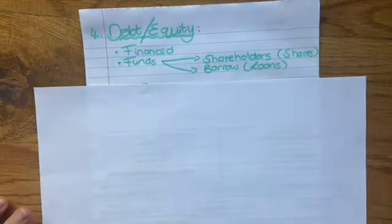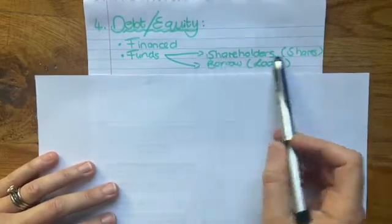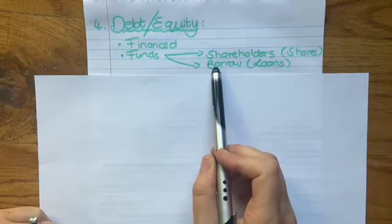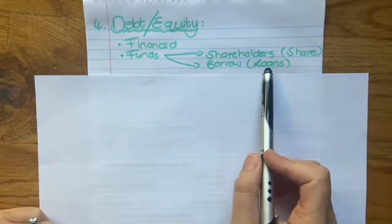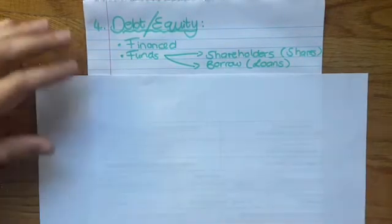This mainly shows how the business is financed—where do they get their funds from? There are two options: one can be the shares that they issue and sell, and the second one is to borrow money, which would be your loans. You're going to look at these two options and see which side is weighted the most, then make a comment on that.